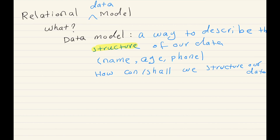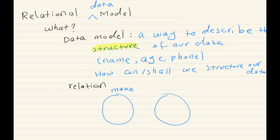The next question is: what is a relation? Because in the relational data model, we are putting two concepts together. In its simplest form, relations can be defined over two sets. Imagine we have a set 'make' and a set 'model.' Some makes could be Toyota, Honda, Ford, and some models would be listed as well. A relation in this case is defined over the Cartesian product of these two sets.